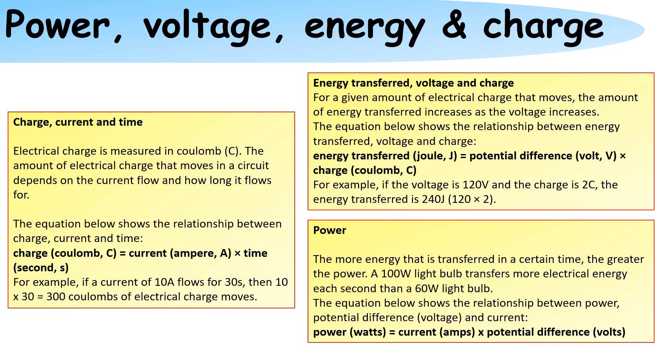The more energy that is transferred in a certain time the greater the power. So therefore a 100 watt light bulb transfers more electrical energy each second than a 60 watt light bulb. The equation for this is that power is equal to current times potential difference.